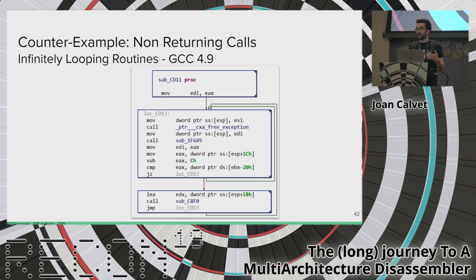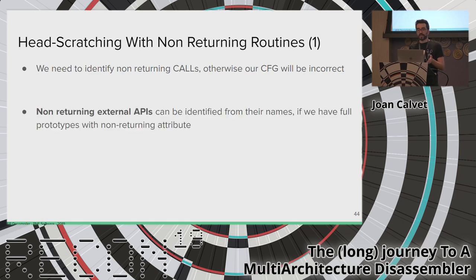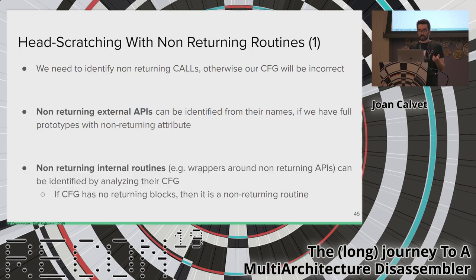From a disassembler perspective, how do we know which APIs do not return? It's in their prototype — there is a specific attribute indicating non-returning behavior. Note that returning void and being non-returning are two different things. Another example of non-returning routines are infinitely looping routines, such as those from GCC library code that have no way to return to the caller.